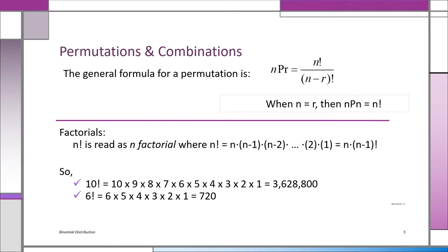When N equals R, then NPN is just N factorial. Ten factorial is 10 × 9 × 8 × 7 × 6 × 5 × 4 × 3 × 2 × 1, which is 3,628,800 — more than 3 million. Six factorial is 6 × 5 × 4 × 3 × 2 × 1, or 720. It's surprising how large these numbers become. If you try 50 factorial, it's going to be an incredibly large number.